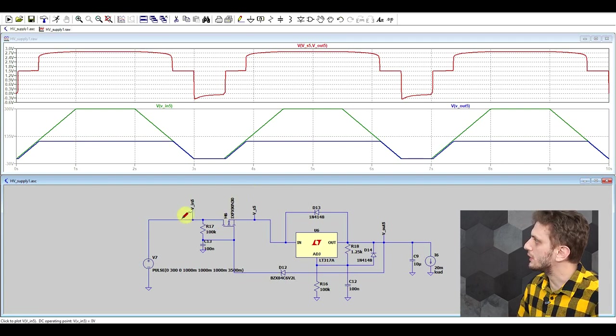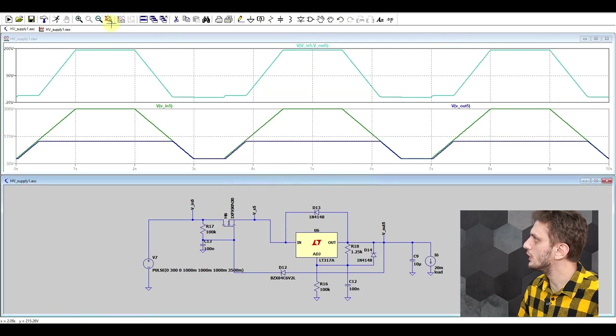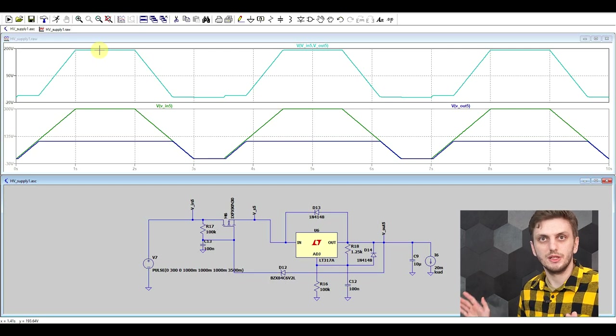But now if we look at what happens on the entire regulator, so the full voltage drop on it, we can see that at some point it does reach 200 volts and that's perfectly normal. So this is when the input is 300 and the output is 100.